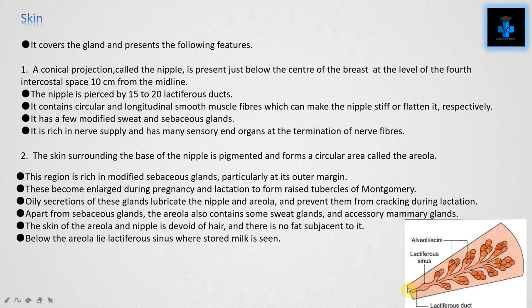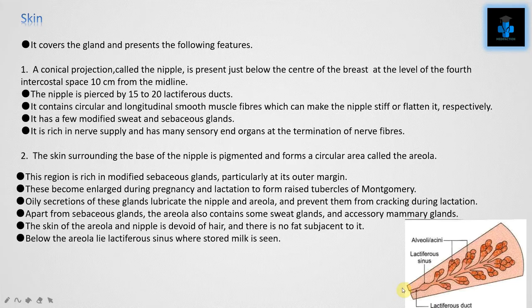Number two, the skin surrounding the base of the nipple is pigmented and forms a circular area called the areola. This region is rich in modified sebaceous glands, particularly at its outer margin. These become enlarged during pregnancy and lactation to form the tubercles of Montgomery. Oily secretions of these glands lubricate the nipple and areola and prevent them from cracking during lactation. Apart from sebaceous glands, the areola also contains some sweat glands and accessory mammary glands. The skin of the areola and nipple is devoid of hair and there is no fat subjacent to it.